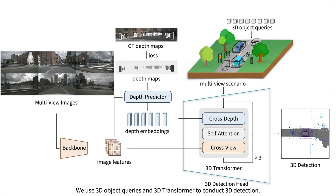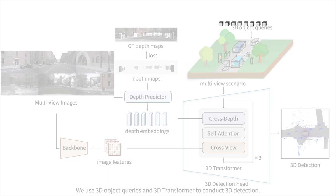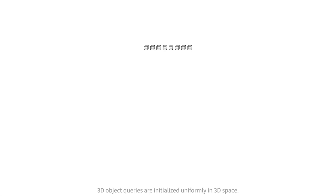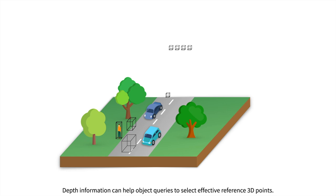We use 3D object queries and a 3D transformer to conduct 3D detection. The 3D object queries are initialized uniformly in 3D space. This information helps object queries select effective reference 3D points.